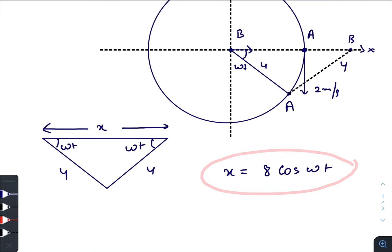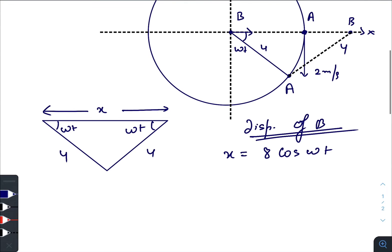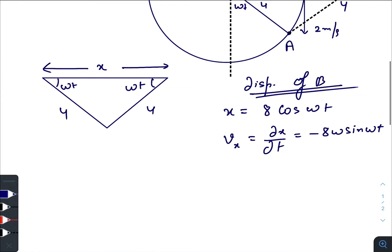This is how the displacement of Particle B is changing with respect to time. So velocity of Particle B along the x-axis would be dx/dt, that is -8ω sin ωt. And ω is the angular velocity: v/r. v is 2, radius is 4, so 1/2. So final velocity becomes -4 sin(t/2).